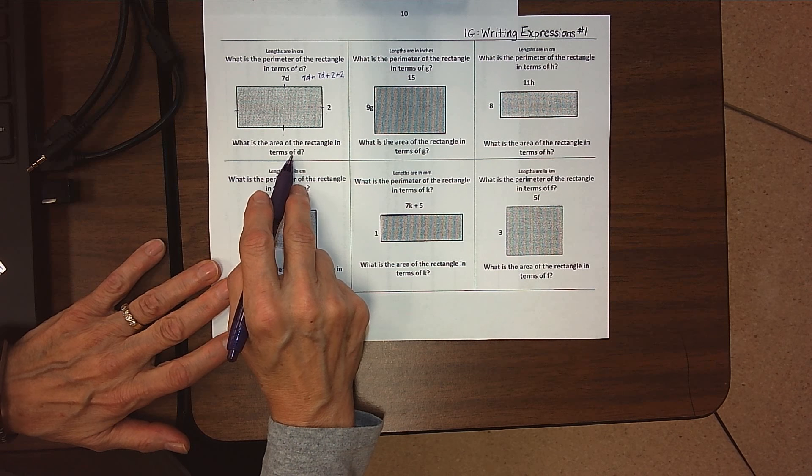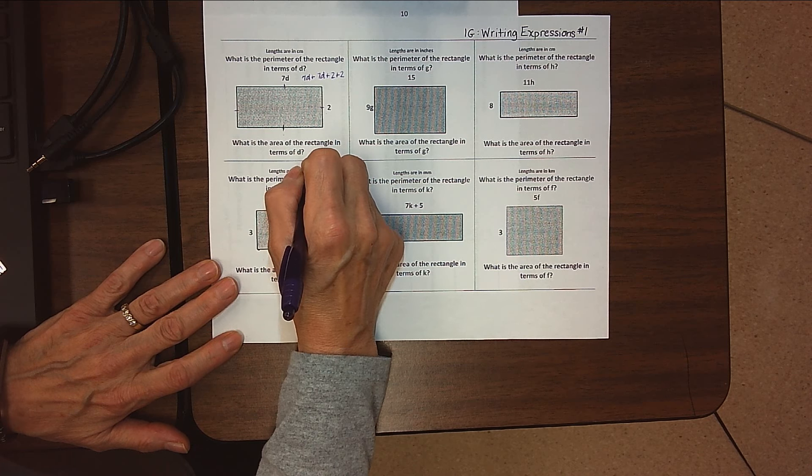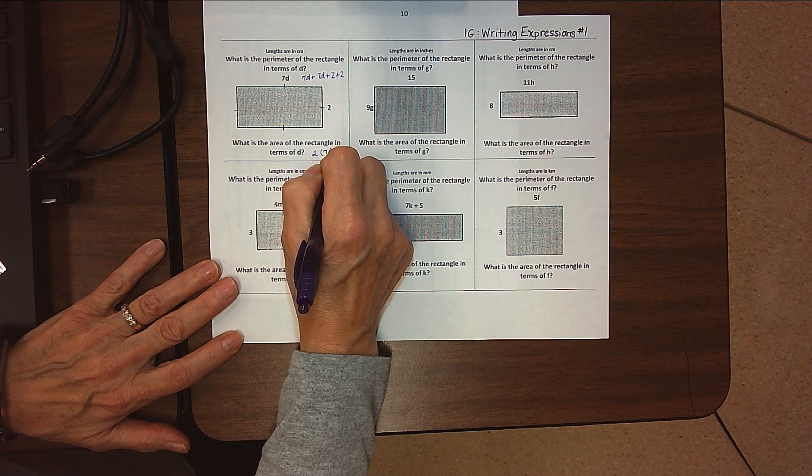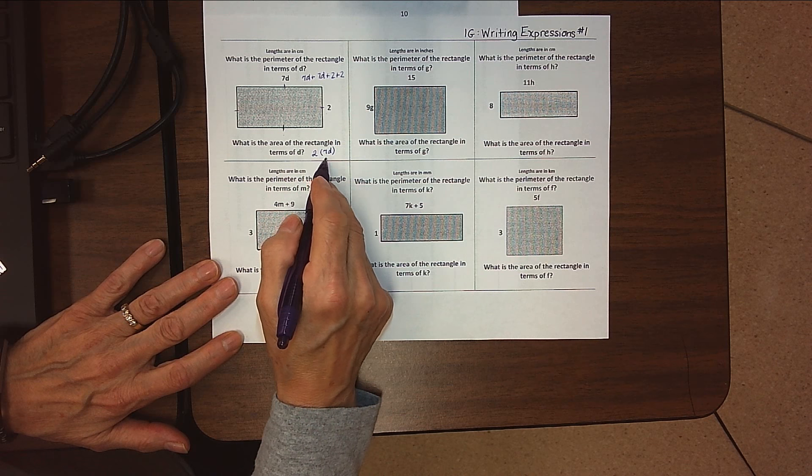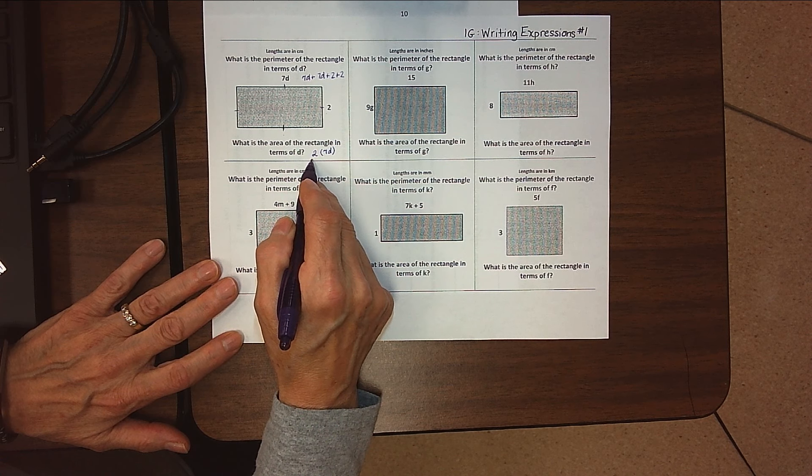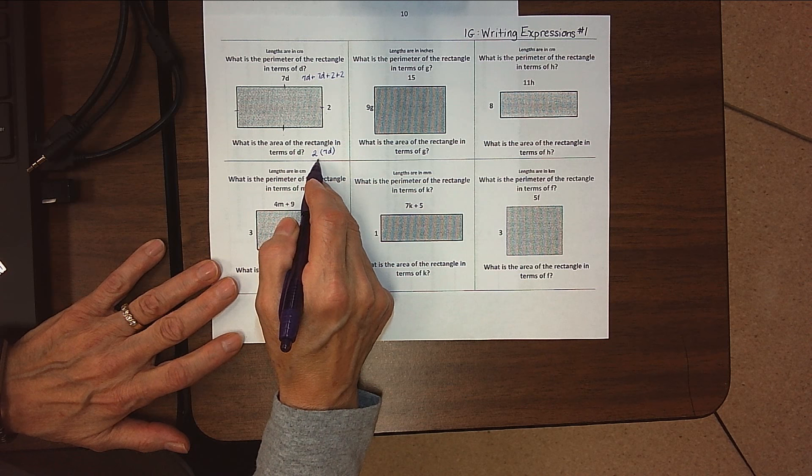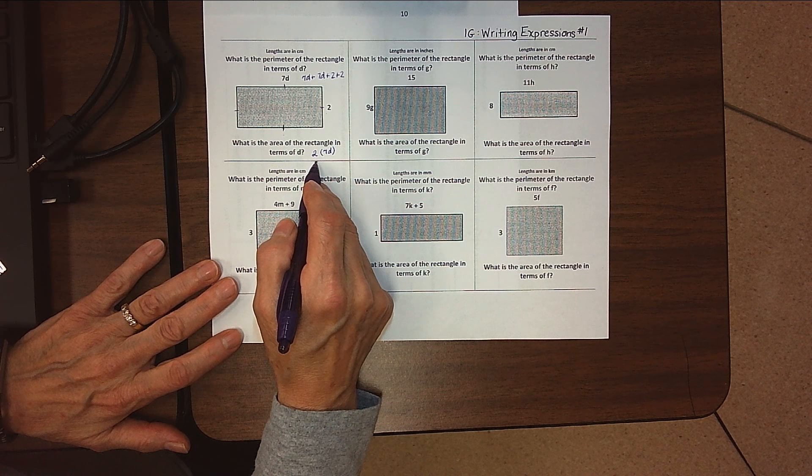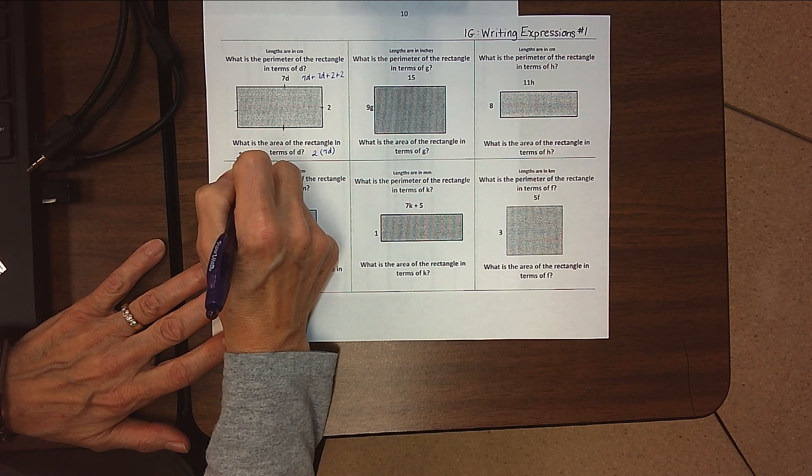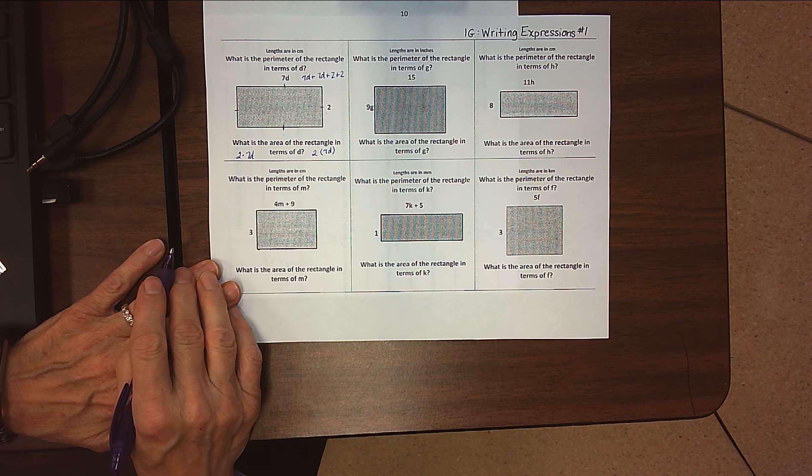So we would do 2 times 7d. I put that in parentheses again because we want to multiply the 7 times d before we multiply it by 2. But with multiplication, it would have been okay just to write 2 times 7d. That would have been fine as well.